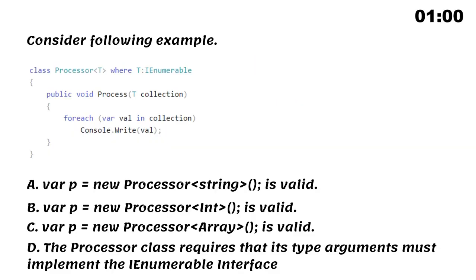Consider the following example based on the code snippet which options are correct. var p equals new processor string is valid. var p equals new processor int is valid. var p equals new processor array is valid. The processor class requires that its type arguments must implement the IEnumerable interface.